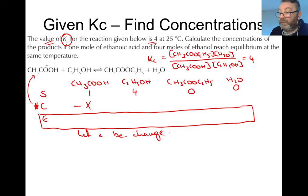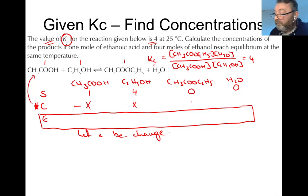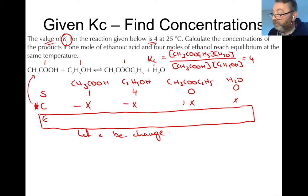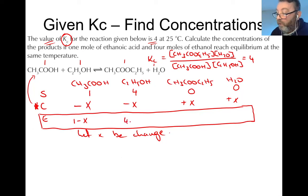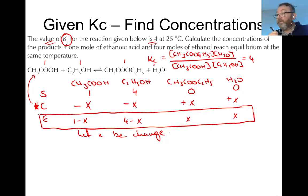The ratio in the balanced equation is 1:1:1:1, meaning they all get an X. However, reactants are used up by X and products are increased by X. Going down each column to the equilibrium line we get: 1 minus X mol/L for the acid, 4 minus X mol/L for the alcohol, X mol/L for the ester, and X mol/L for the water. Now we have concentrations at equilibrium expressed in terms of X.